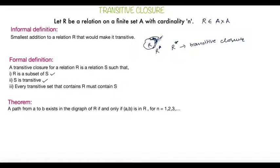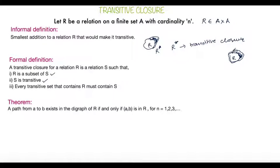The third condition is that every transitive set that contains R must also contain S. So for example, if S is my transitive closure, any other transitive set which has R should have S as well. A contradiction would be if I have another set that contains R but does not contain S — in that case my first drawing was not a transitive closure, because I found a smaller addition that is also transitive.